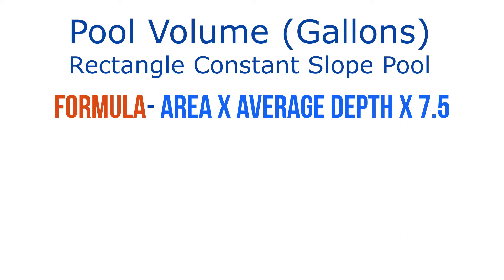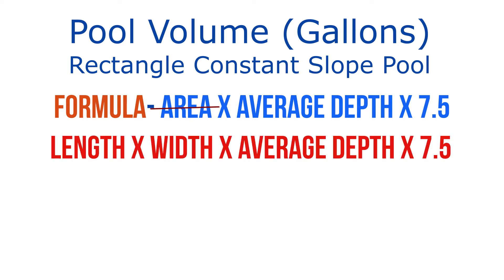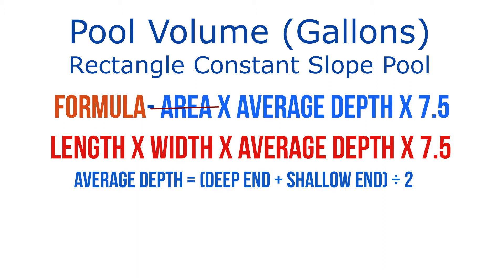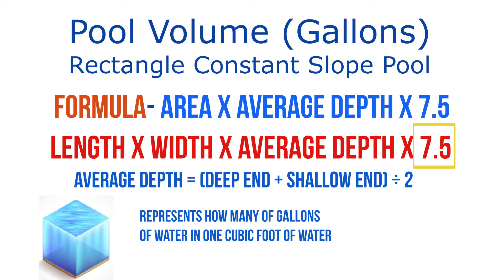Let's first review the formula. The formula is area times average depth times 7.5. Breaking it down further, we can replace area with length times width, giving us length times width times average depth times 7.5. The average depth is calculated by adding the deep end and shallow end and dividing by two. That 7.5 in the formula represents how many gallons of water are in one cubic foot.